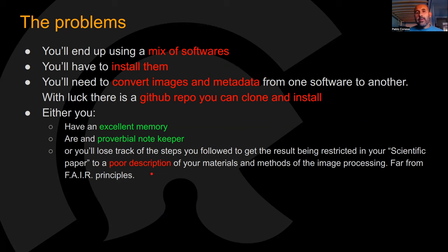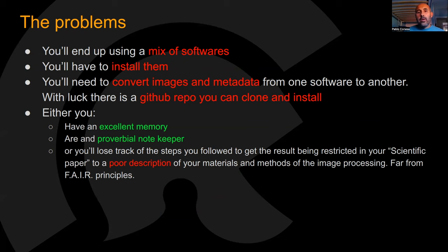You'll end up using a mix of software that you need to install, and you'll need to convert images and metadata from one format to another. With luck there's a GitHub repository somewhere that can do this for you, but you need to clone and install it — something you may not be ready to do. Either you have an excellent memory, or you're a prodigious note-keeper. Otherwise you'll lose track of all your steps, resulting in a poor description of materials and methods in your scientific article — very far from FAIR principles.